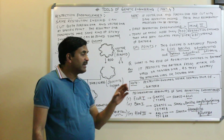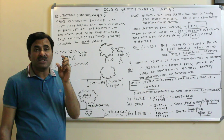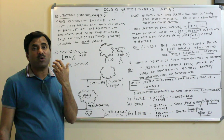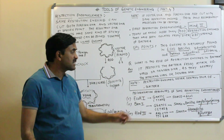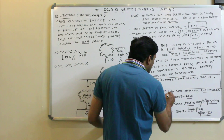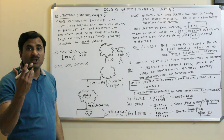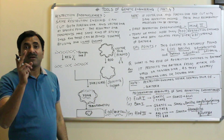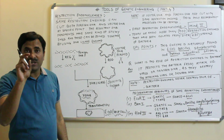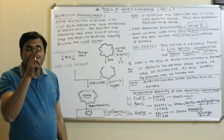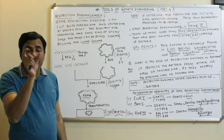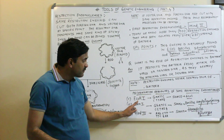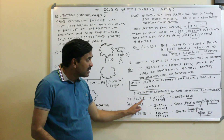Whenever the restriction endonuclease enzyme acts, it recognizes a four-to-six nucleotide sequence known as the recognition sequence. Here are some recognition sequences of restriction endonuclease enzymes. The restriction endonuclease enzyme inspects the entire length of the DNA, then cuts the DNA at specific nucleotide positions. Those sites are called recognition sequences or palindrome nucleotide sequences.